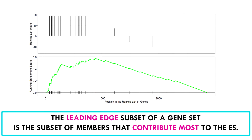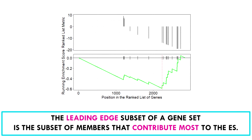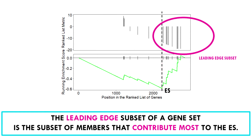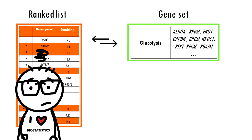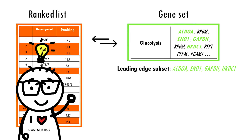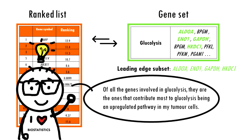If you're dealing with GSEA results you will often see the term 'leading edge subset.' The leading edge subset of a gene set is the subset of members that contribute most to the enrichment score. For a positive enrichment score, the leading edge subset is the set of members that appear in the ranked list before the peak score; for a negative enrichment score, it is the set of members that appear after the peak score. In a way it tells you which genes of that particular pathway are the most important, because they are the ones contributing most to that enrichment score — for example, contributing most to that pathway being upregulated.